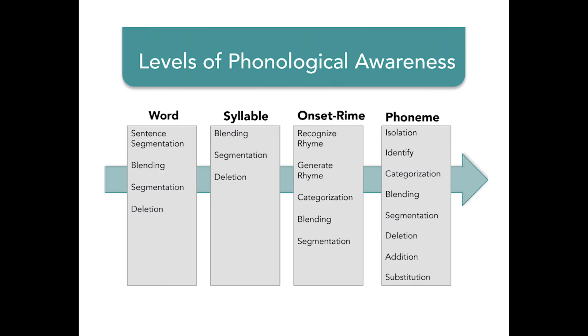Onset and rhyme is just taking it to a smaller structure. We're not to the phoneme level yet — the individual sounds — but we're getting closer to that with onset and rhyme. The onset is all of the sounds that come before the vowel sound. The rhyme — spelled r-i-m-e, which is different from rhyming words — is the vowel and everything that comes after it. For example, if I said the word 'black,' the onset would be 'bl' and the rhyme would be 'ack.'